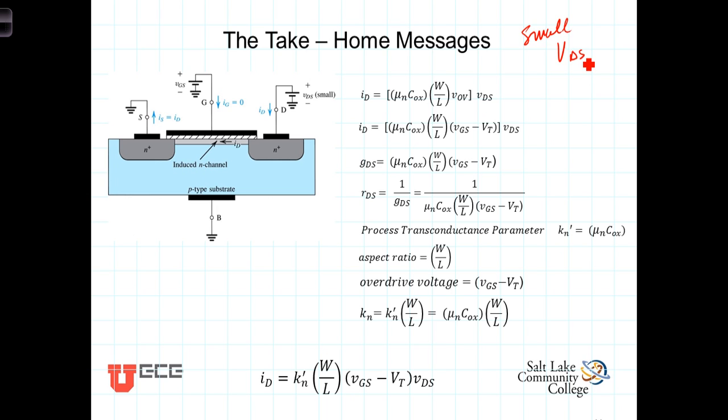The current we found to be a function of these parameters of the transistor itself, times the overdrive voltage, where the overdrive voltage is just the amount that the gate voltage exceeds the threshold voltage, times the voltage at the drain.